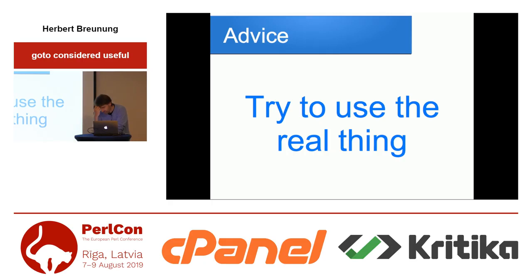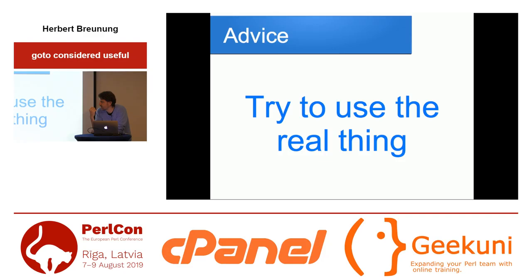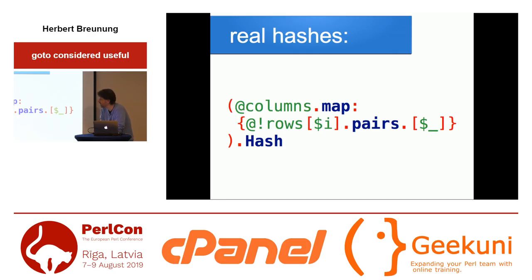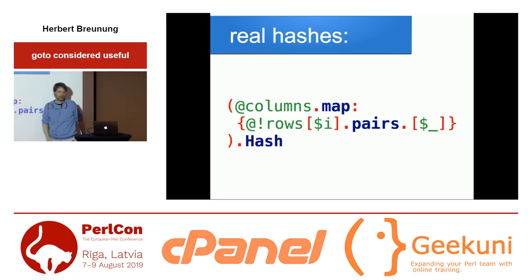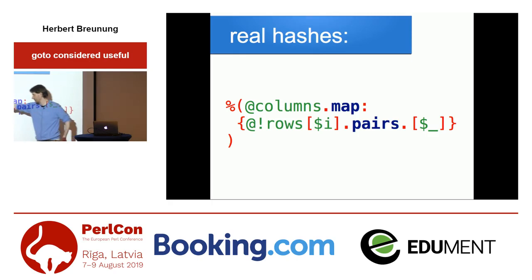Coming to my last slides: try to use the real thing. Don't try to use some magic number or some weird construct which was tried and works in Perl 5. Try to express the idea you have. You use Perl 6 to have fun, to do it the right way, to do it the clean way. For instance, we have real hashes - that means there are collections of real pairs. If you want to get a hash out of it at the end, types matter. Of course you can do it with that operator, but that's a little bit more hassle compared with Perl 5.